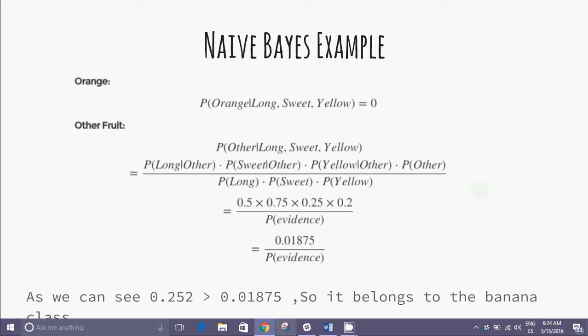It's evident that 0.252 is greater than 0.01875, so it belongs to banana class.